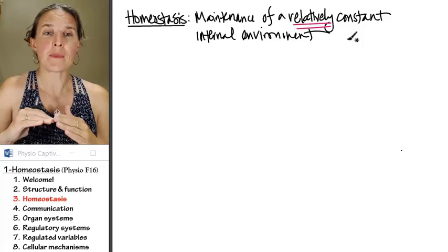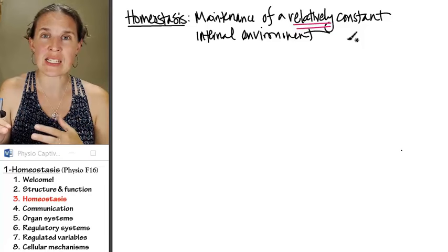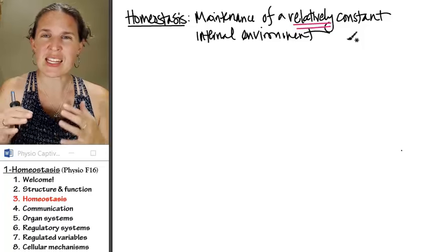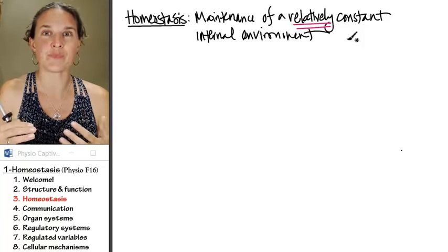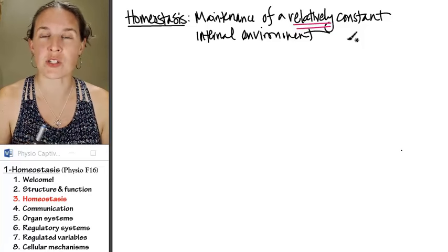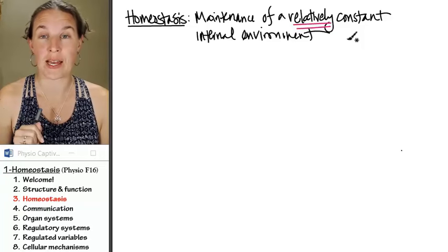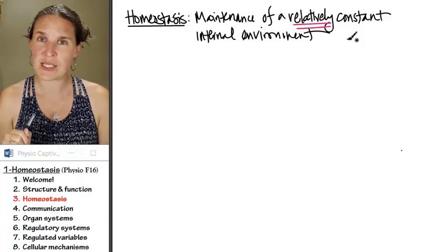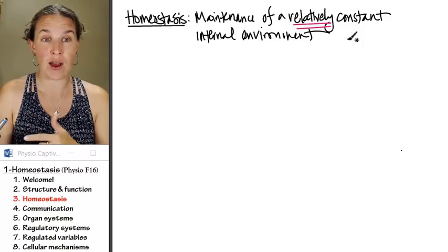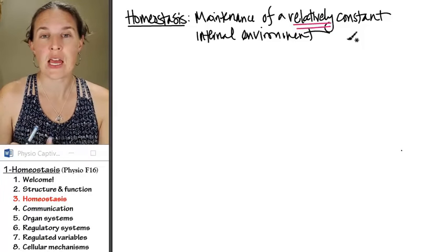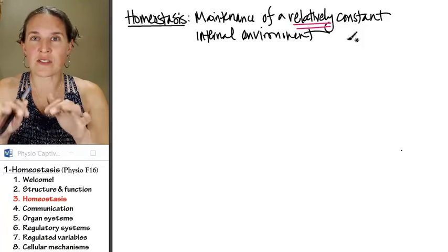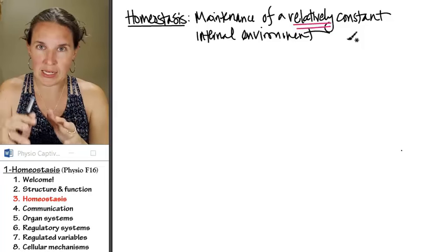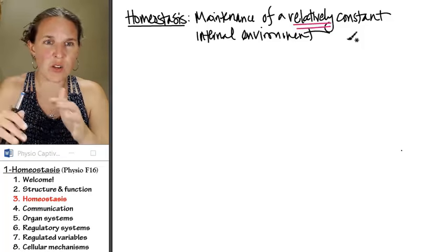So in a homeostatic system, it isn't like your body temperature is maintained at 98.6 all the time. And if you go to 98.7, you are now out of homeostasis. It's a relatively constant maintenance, which means you kind of go all over the place.